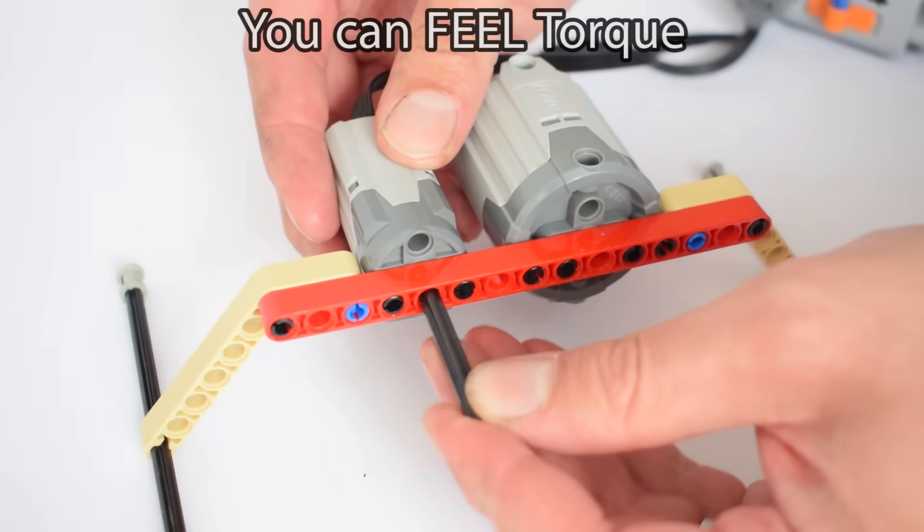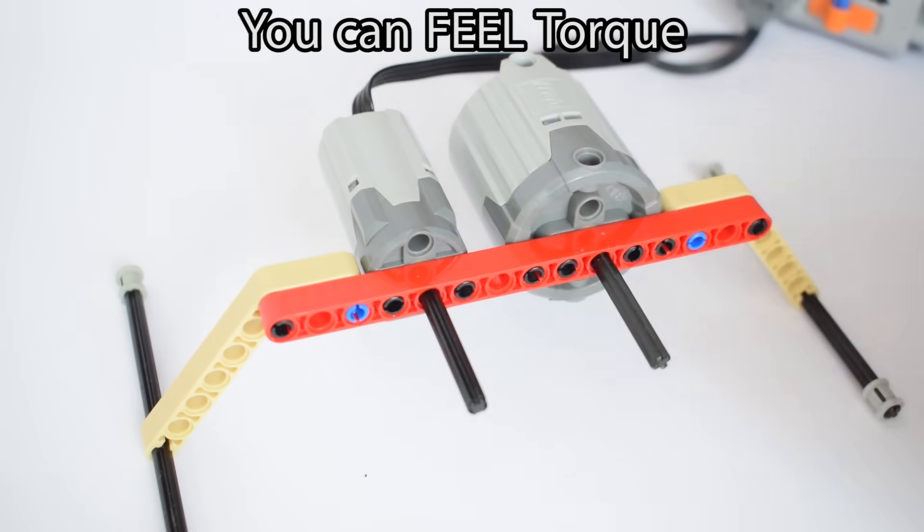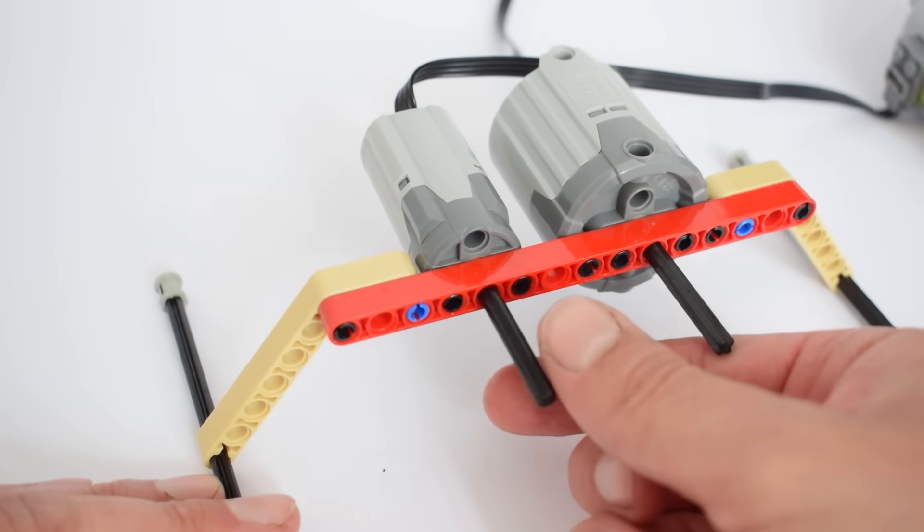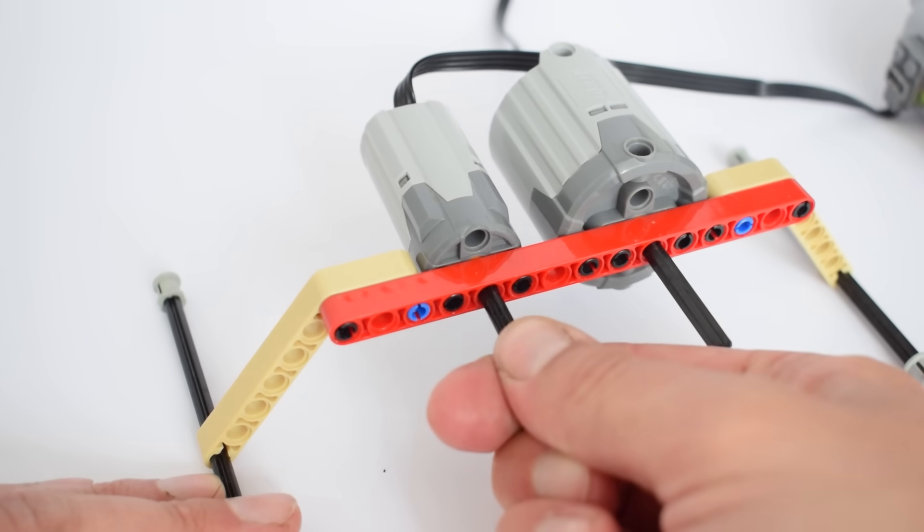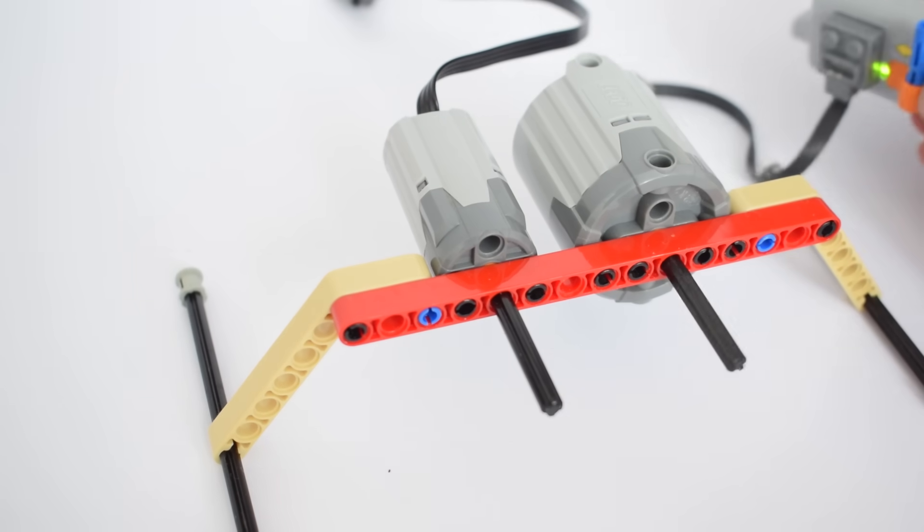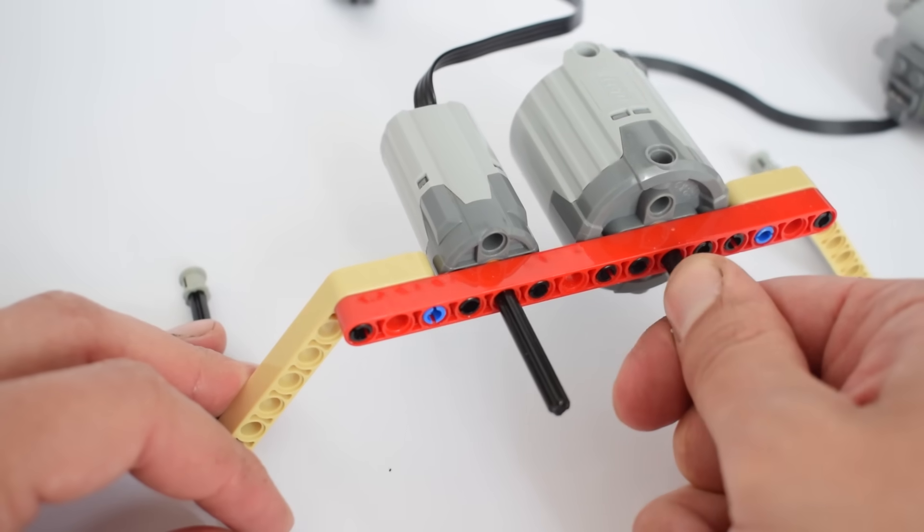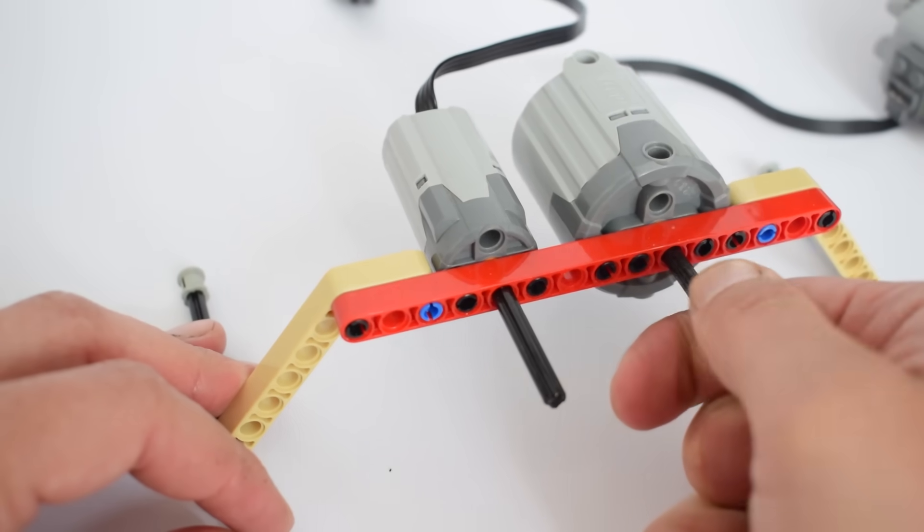This difference in torque can easily be felt. If we install a small shaft into our motor, we can feel the difference in rotational force coming from these motors. The difference in torque output is very obvious and the large motor feels much stronger and it's very difficult to stop.